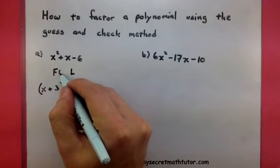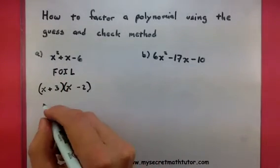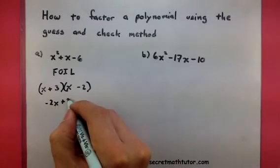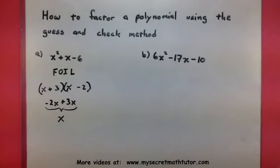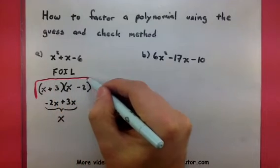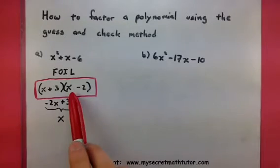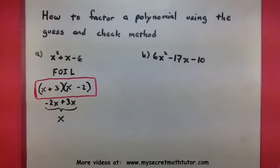So we do these last two. So, we check the outside, that's a negative 2x, and we check the inside, positive 3x, and we see if they combine to give us an x. If it does, we know that this is the correct answer. So, you can see that method is actually not so bad. Establish your first terms, establish your last terms, and then check your outside and inside terms to make sure it all works out.